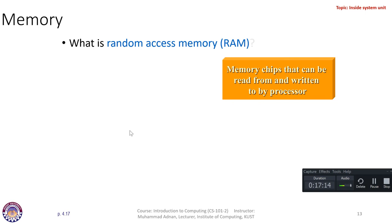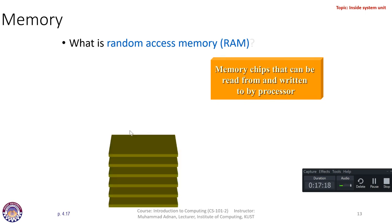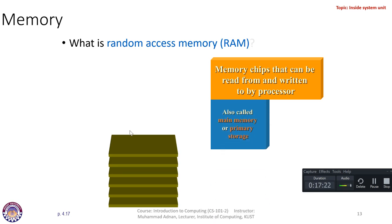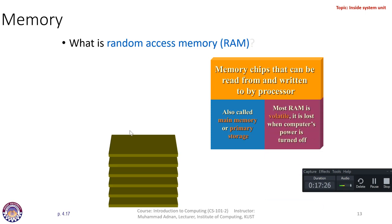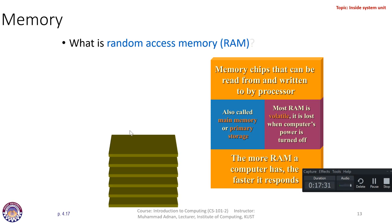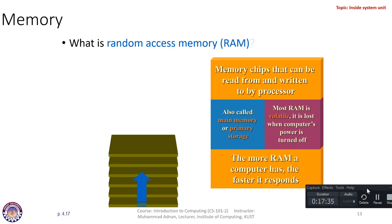Random access memory is located close to the CPU. It is expensive and faster than the hard disk, installed to enhance and support the processor in processing data. It is a memory chip that can be read from and written to by the processor. RAM is also called main memory, primary storage, or simply memory. Most RAM is volatile — meaning its contents are lost when the computer power is turned off. Data is permanently stored on the hard disk, so you do not have to worry about losing data. The more RAM a computer has, the faster it responds.